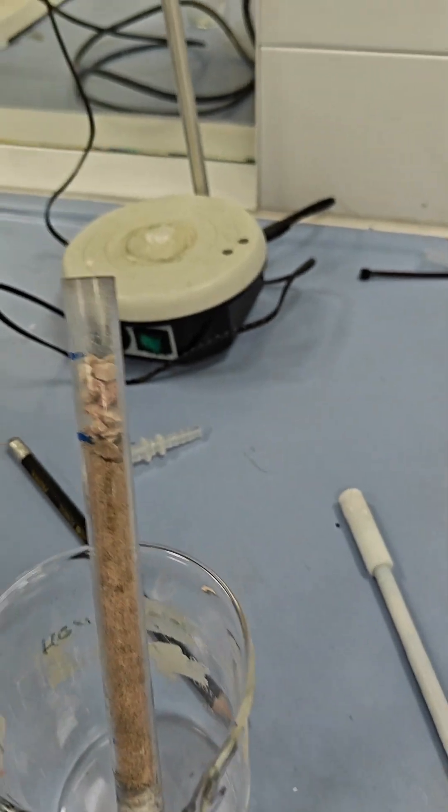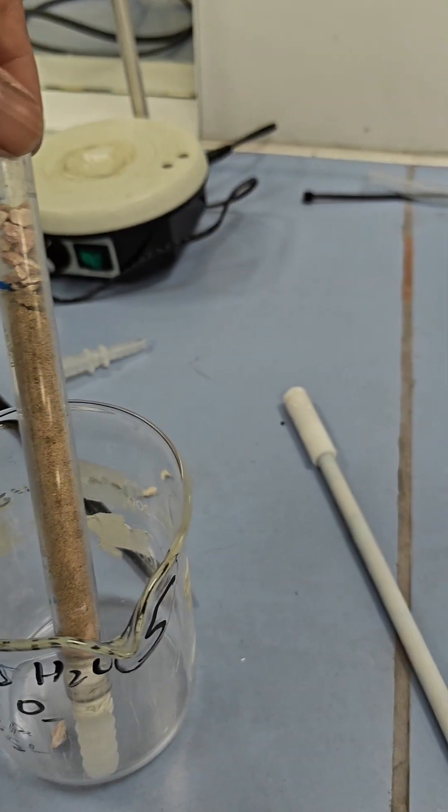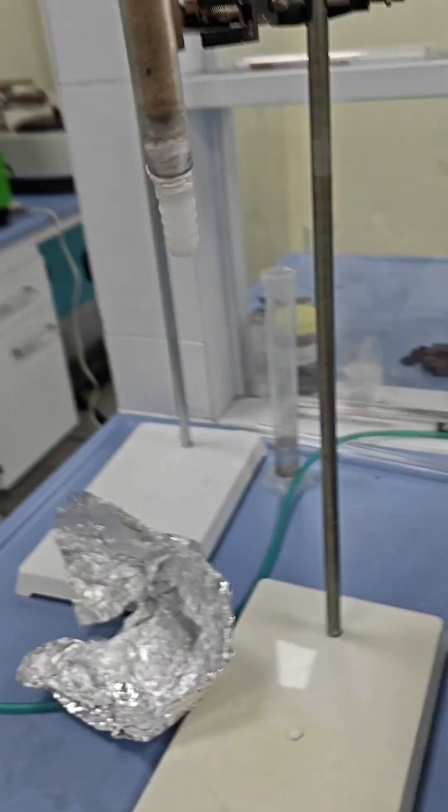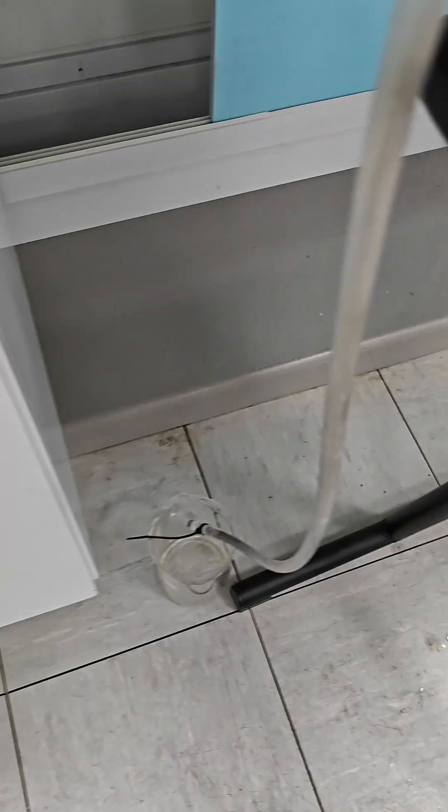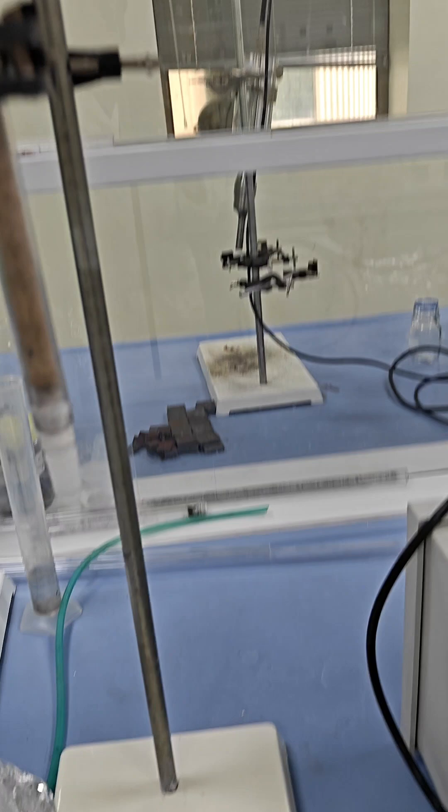and so this column is now ready. This is a filtration column. You can couple it here and then you can couple this with the pipe, and at the top we will have this pipe